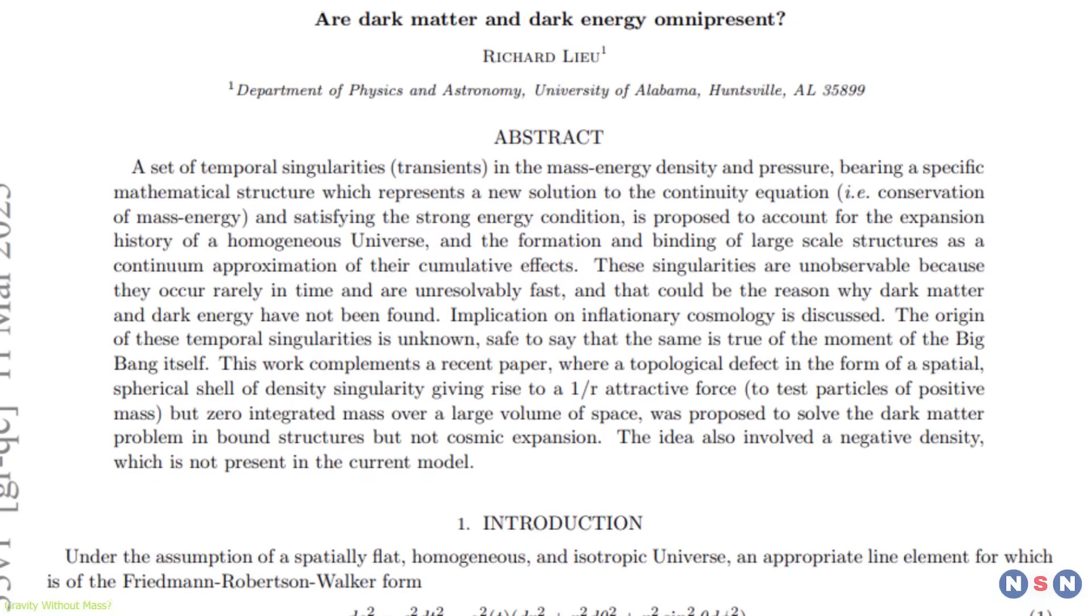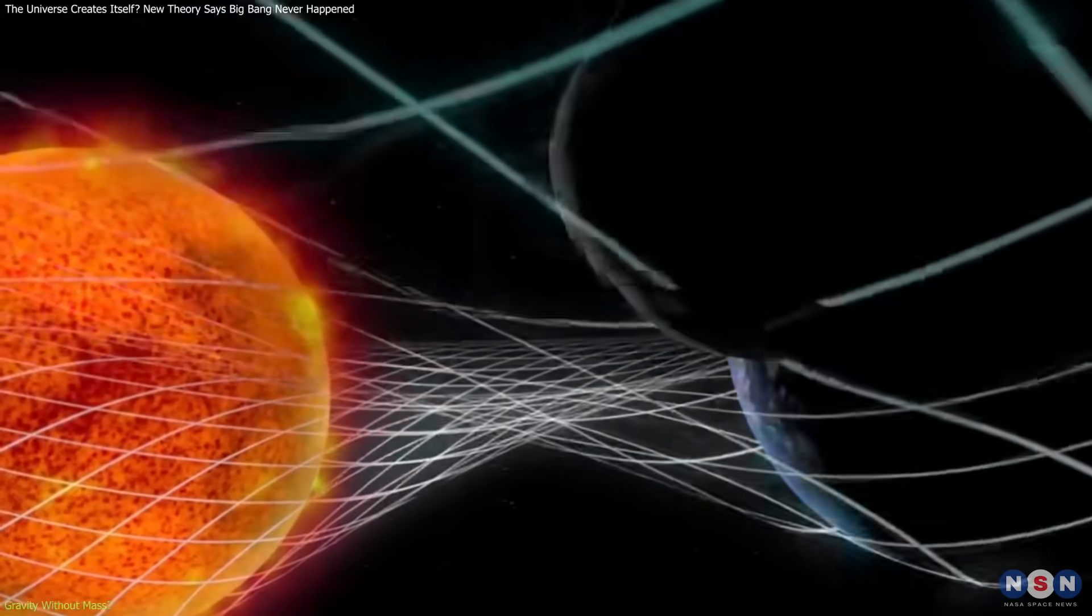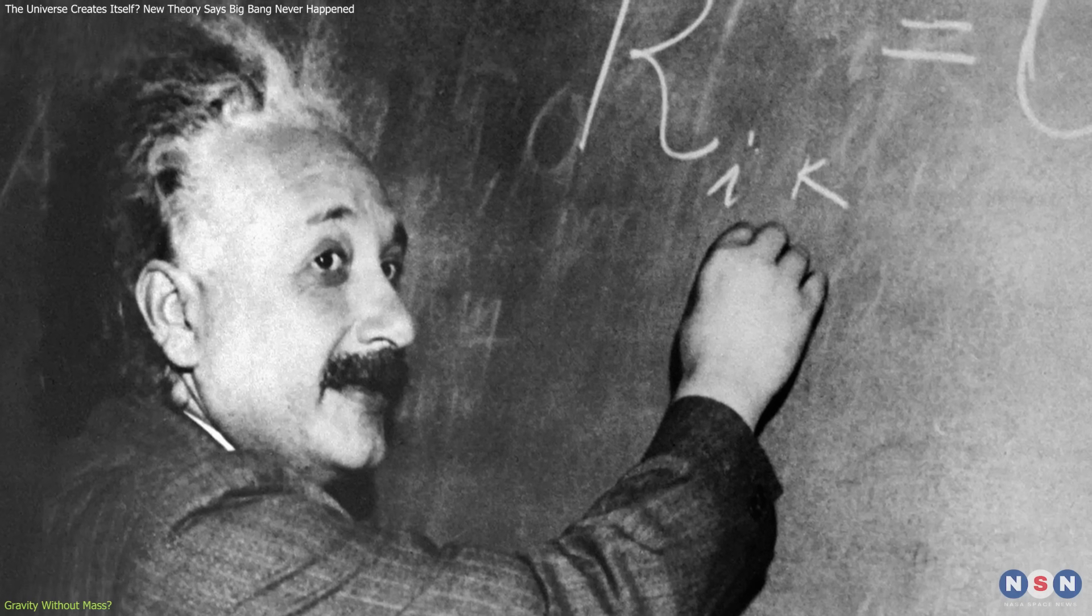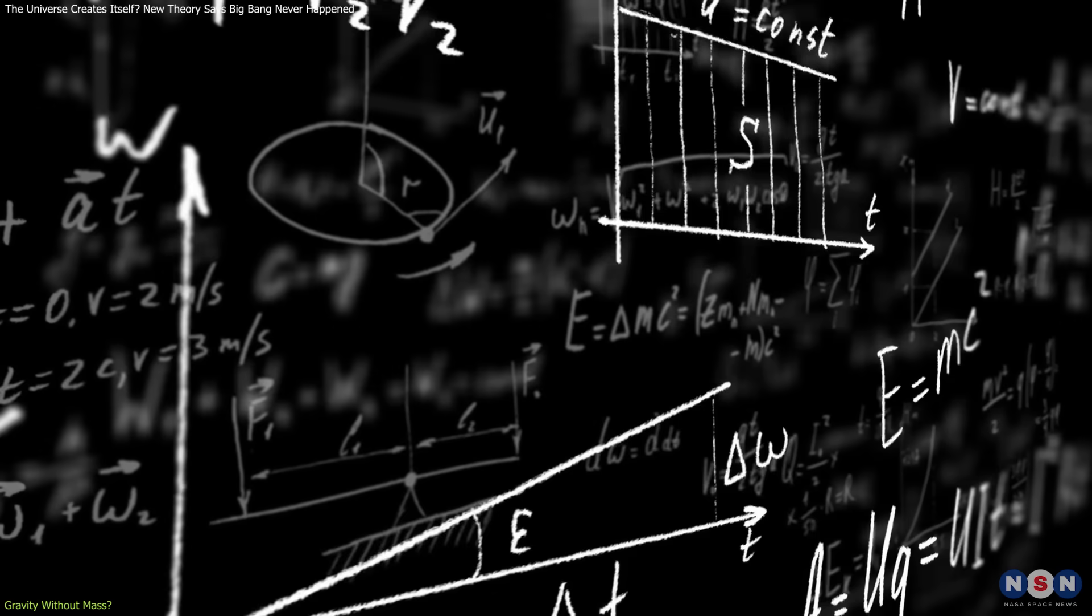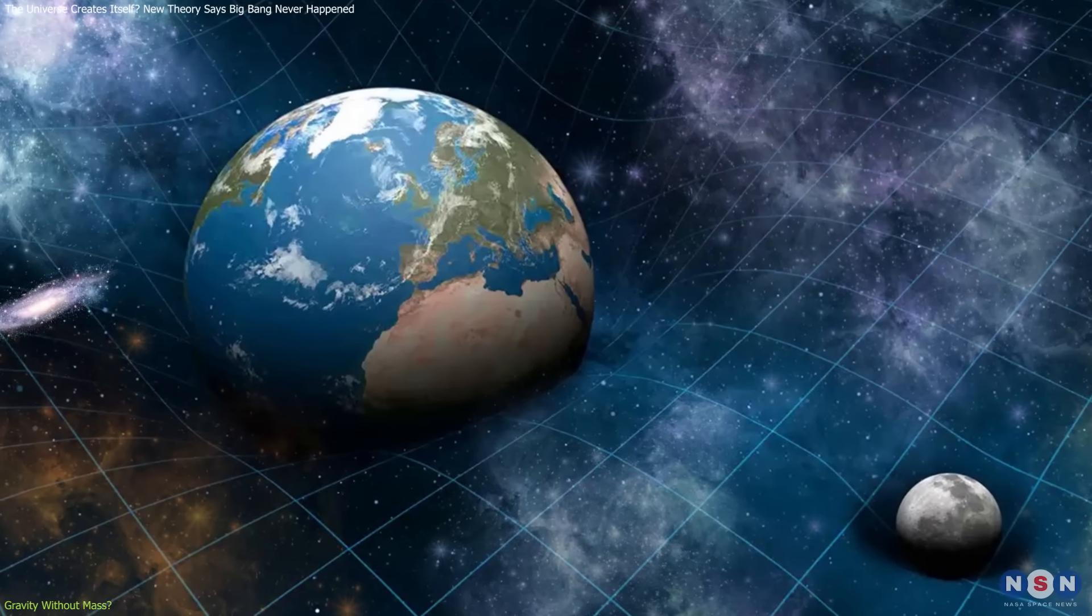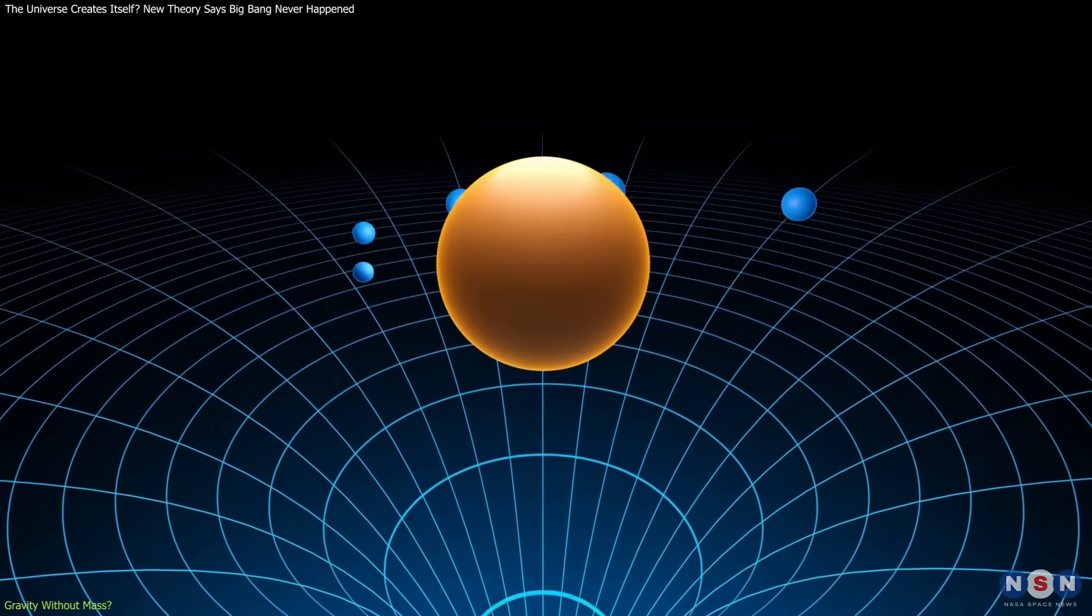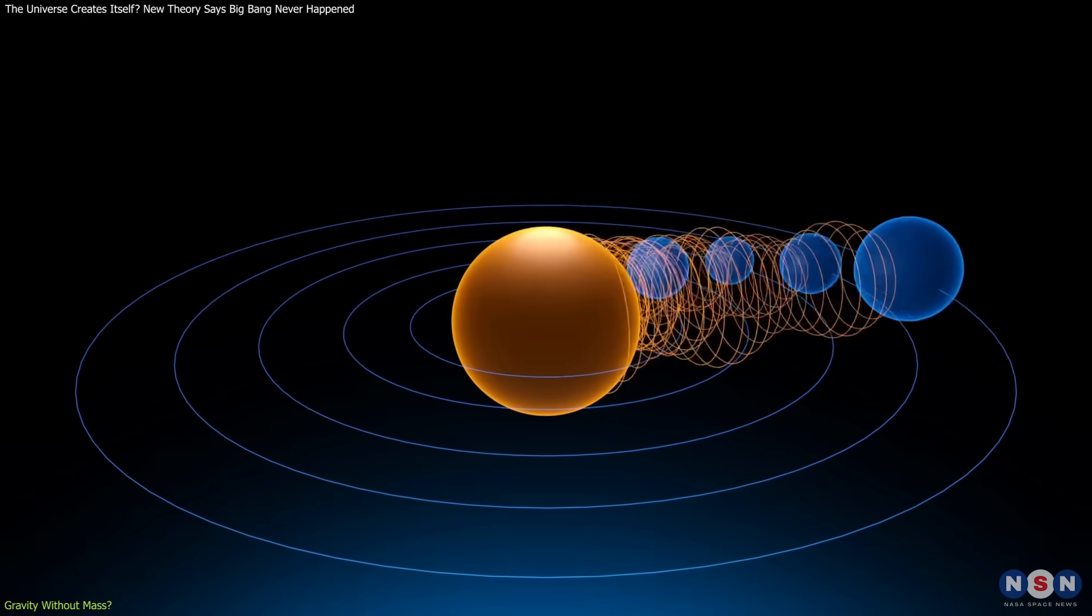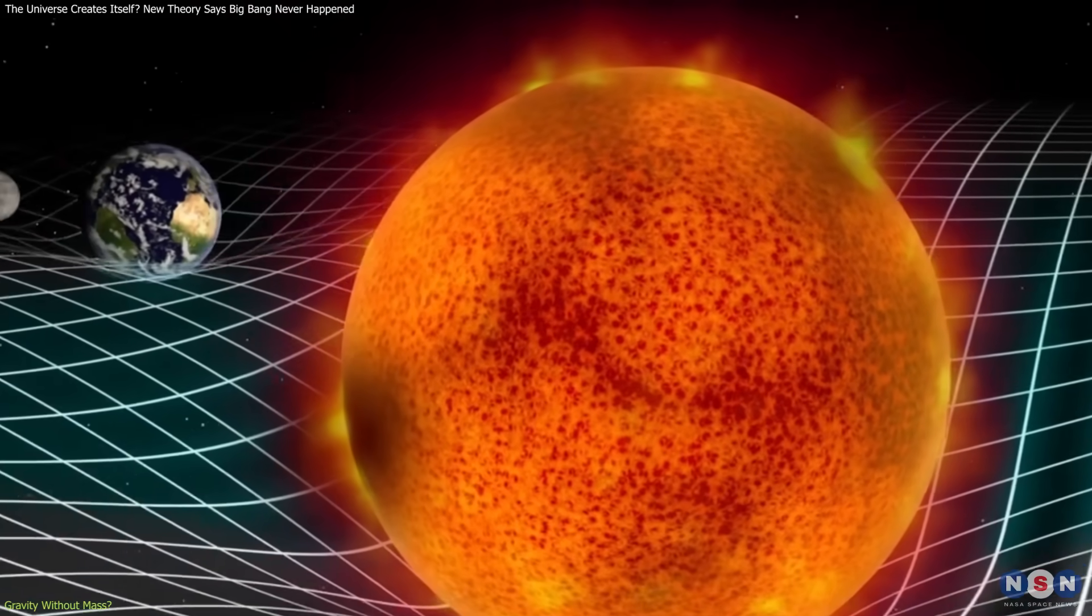One of the most fascinating and controversial claims of Liu's theory is the idea that gravity might exist independently of mass. This challenges one of the central pillars of Einstein's general relativity, which has guided physics for over a century. According to Einstein's framework, mass and energy curve spacetime, and that curvature is what we perceive as gravity. In essence, gravity is not a force in the traditional sense, but a geometric effect caused by mass.